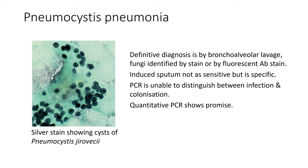The definitive diagnosis of PCP is bronchoalveolar lavage, where you can identify the fungi by fluorescent or silver stain. Induced sputum is a very good way of diagnosing it — not quite as good as lavage, but very specific. Done properly, you pick up about 80% of the people you would pick up on a scope. PCR unfortunately can't distinguish between infection and colonisation, but there's emerging evidence that quantitative PCR is the way forward, although we still don't have a reliable cutoff.